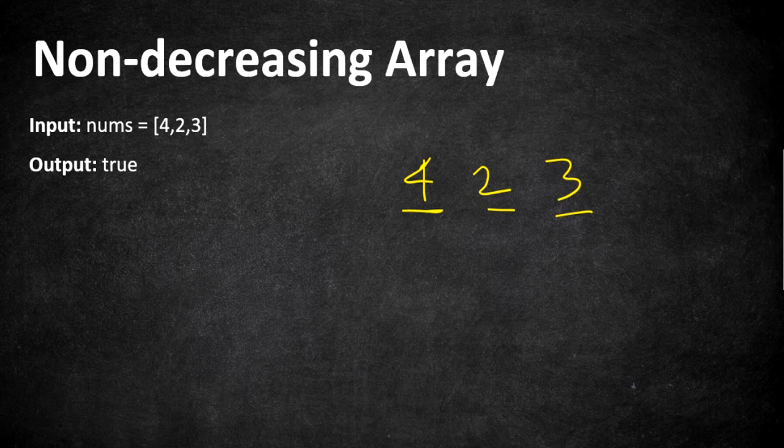If we are updating 4 to 1 then the array becomes 1, 2, 3 and it is in increasing order and we can return true that we can make only one modification to the number and make the array in increasing order.